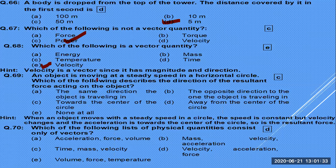An object moving at steady speed in a horizontal circle — which direction is the resultant force? The force is directed toward the center of the circle. This is why acceleration is always directed toward the center in circular motion.